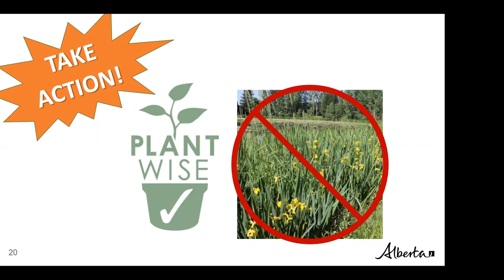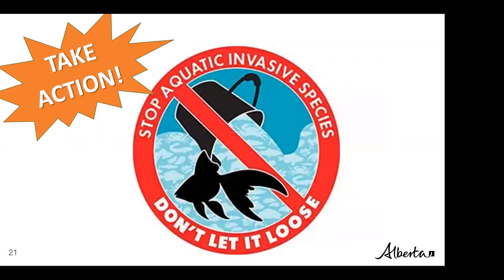Invasive plants like pale yellow iris can take over entire wetlands — it's a pretty flower but toxic and damaging to the environment. Another key action: Don't Let It Loose — never dump your fish tanks, pets, or plants in nature. Instead, give them back to a pet store, a friend, a school, or a community league. Just never dump into natural water bodies.